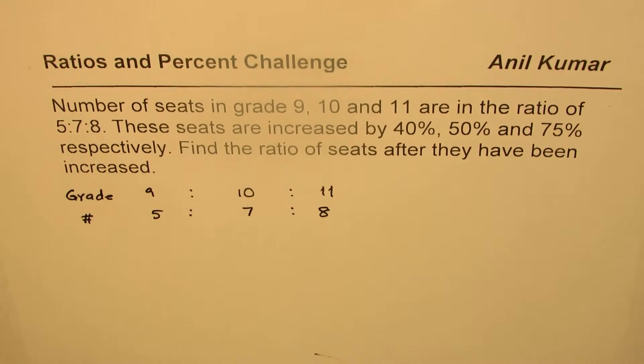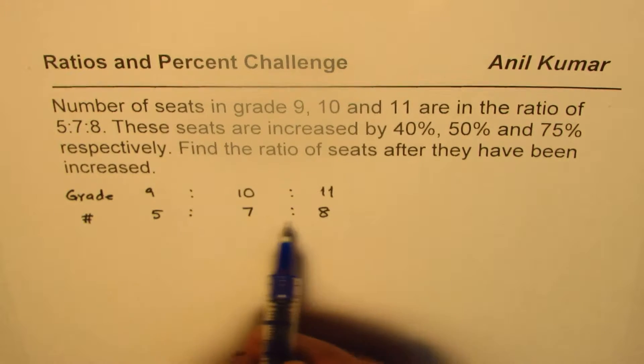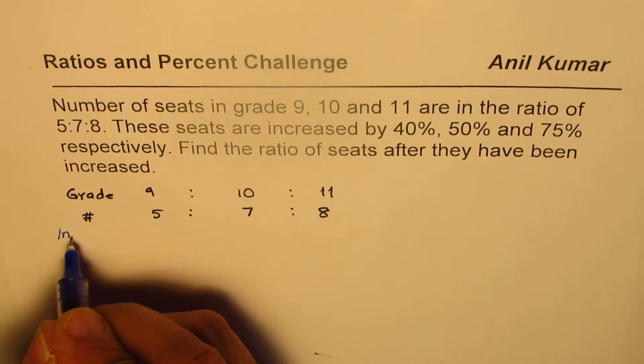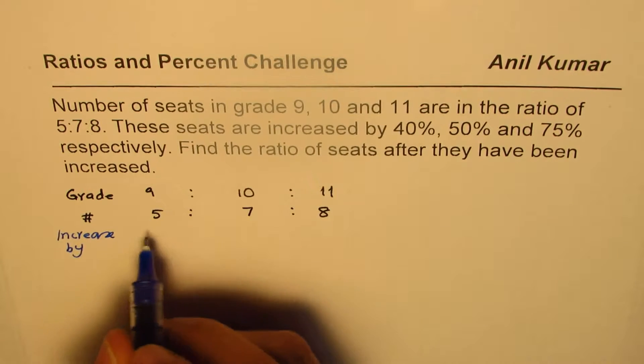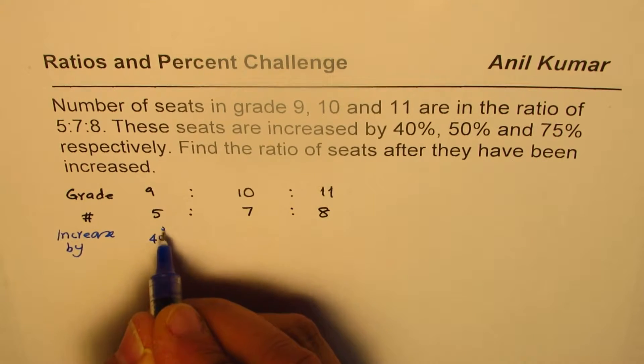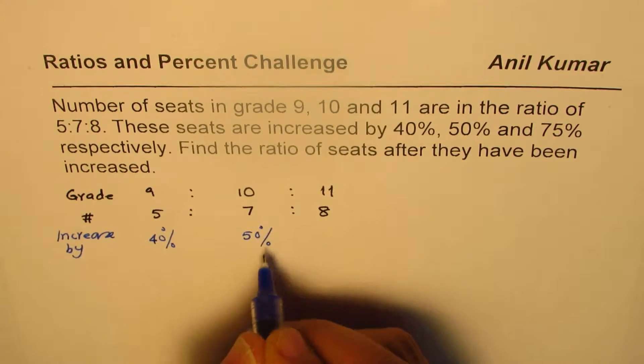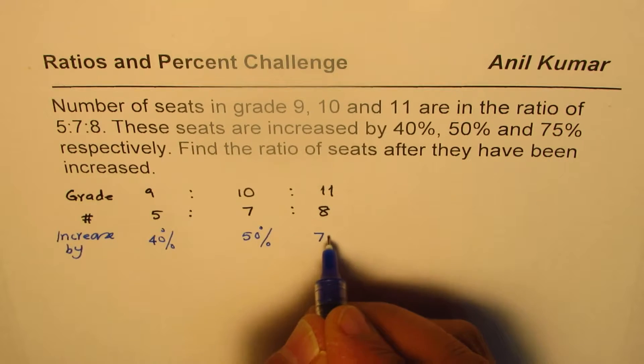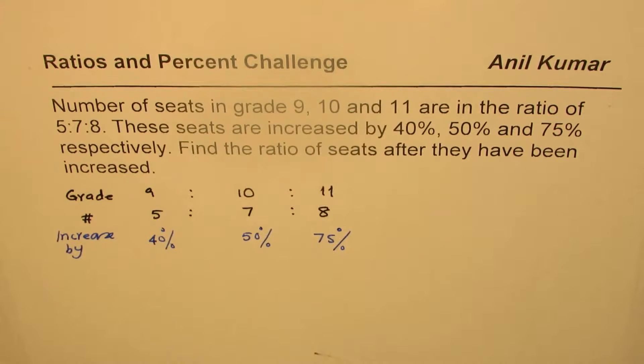The second thing which we are given is this ratio will change if we increase their numbers. So what we are doing here is we are increasing each, increased by, grade 9 students are increased by 40%, grade 10 are increased by 50% and grade 11 students are increased by 75%. So that is the increase in number of each.